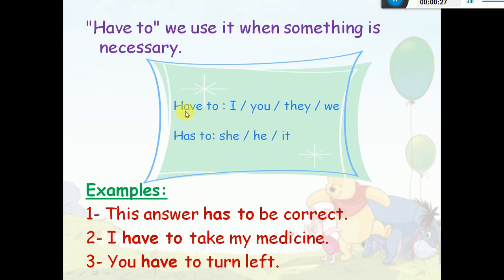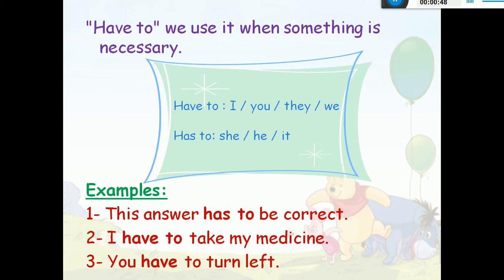We use 'have to' with I, you, they, and we use 'has to' with she, he, it. For example: 'This answer has to be correct.' (هذه الإجابة يجب أن تكون صحيحة.) 'I have to take my medicine.' (يجب أن آخذ الدواء.) 'You have to turn left.' (يجب أن تنعطف إلى اليسار.)